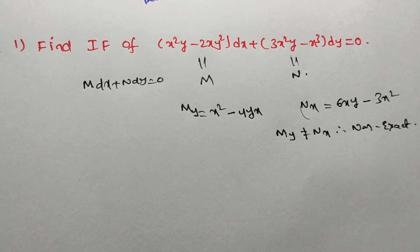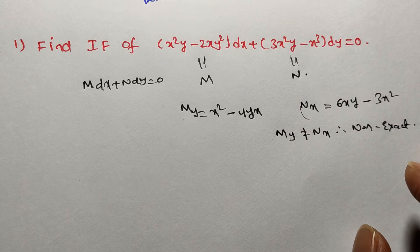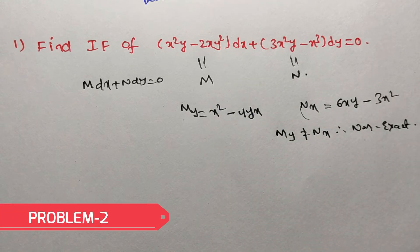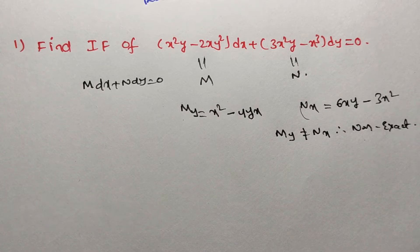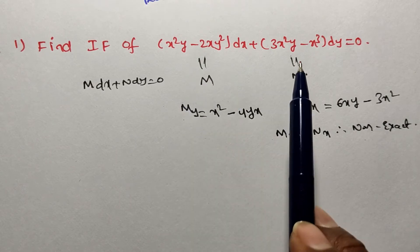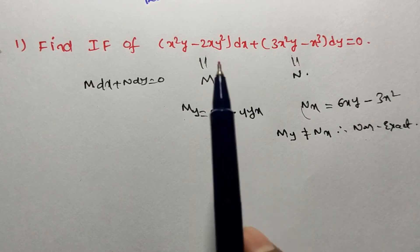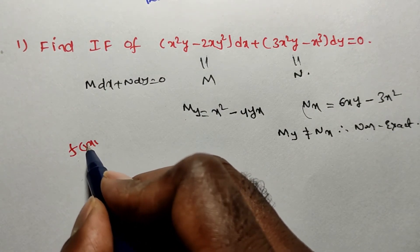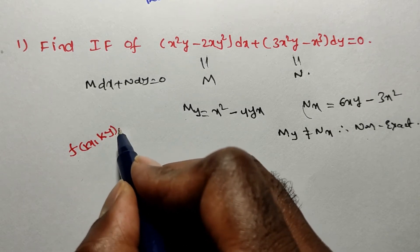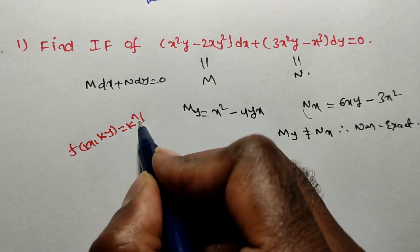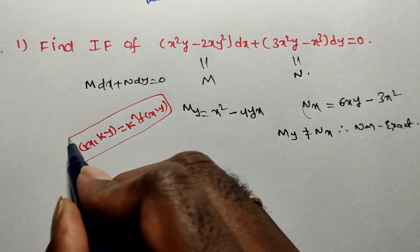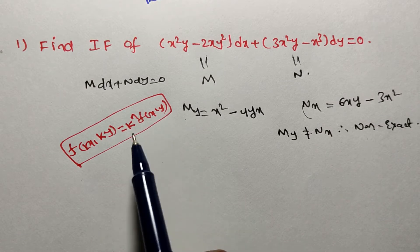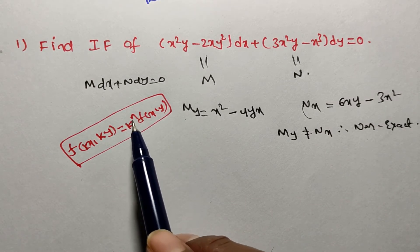So first we ruled the given differential equation non-exact. Now verify whether it is homogeneous or not. When we say the given differential equation is homogeneous, M is a homogeneous function and N is a homogeneous function of the same degree. To prove a function is homogeneous, in place of x substitute kx and in place of y substitute ky, and you should get k to the power n into f(x, y).